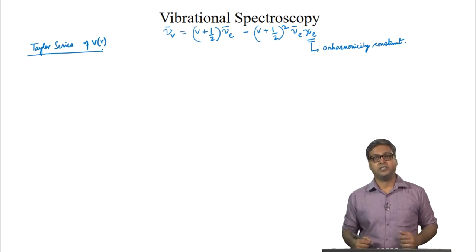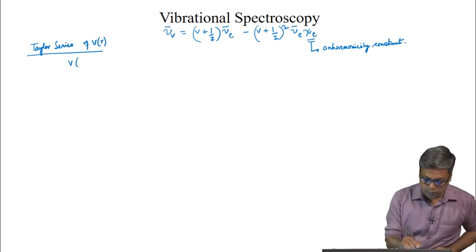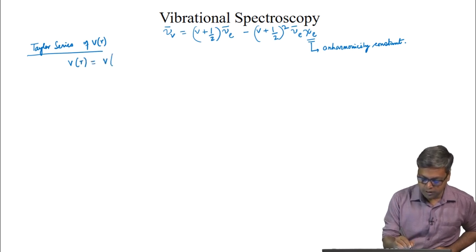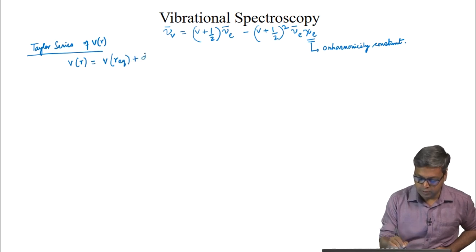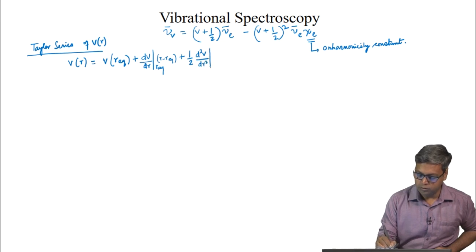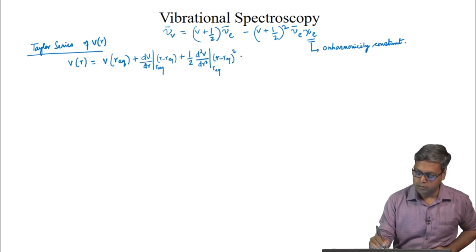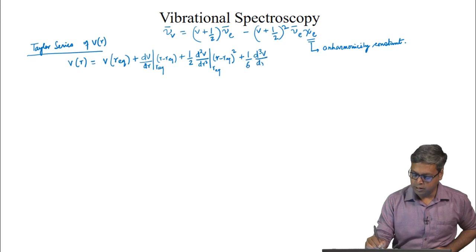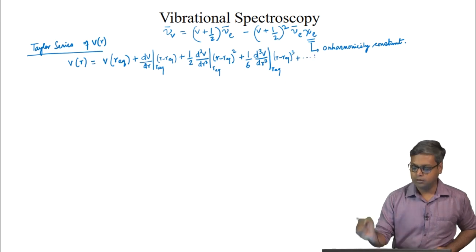We can write the Taylor series expansion as V(R) equals V at the equilibrium bond length, plus dV/dr at r_equilibrium times (r minus r_equilibrium), plus (1/2) d²V/dr² at r_equilibrium times (r minus r_equilibrium)², plus higher-order terms including the cubed term.